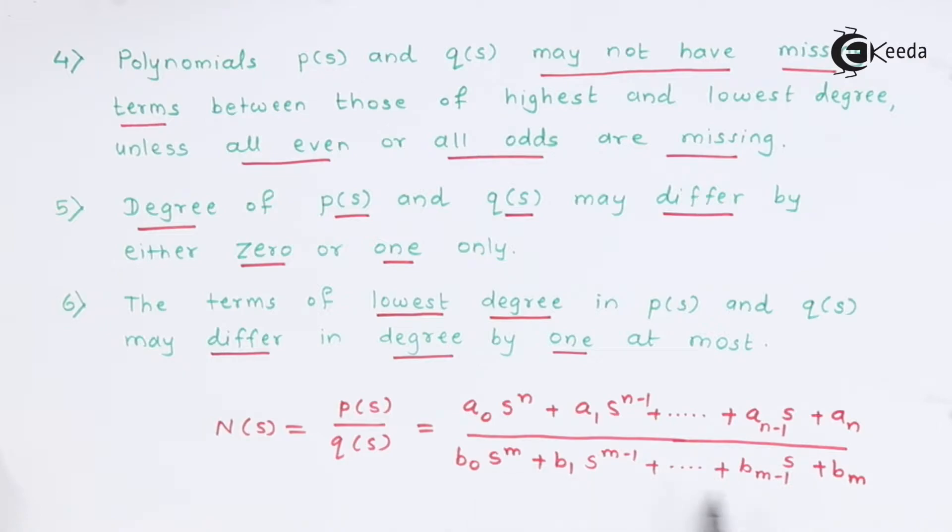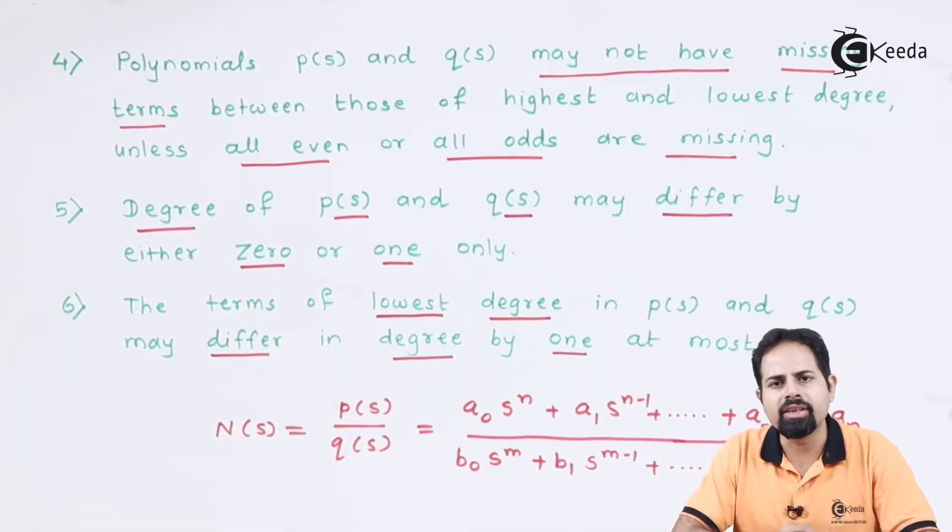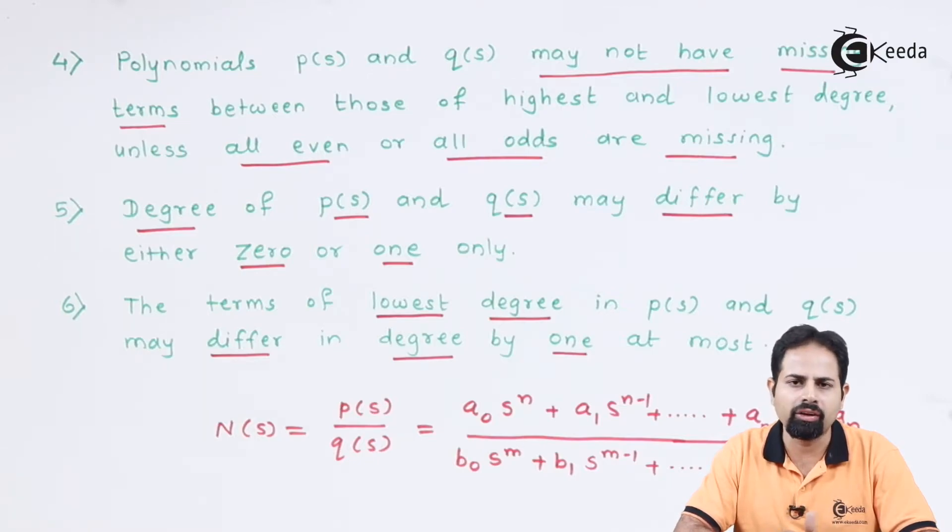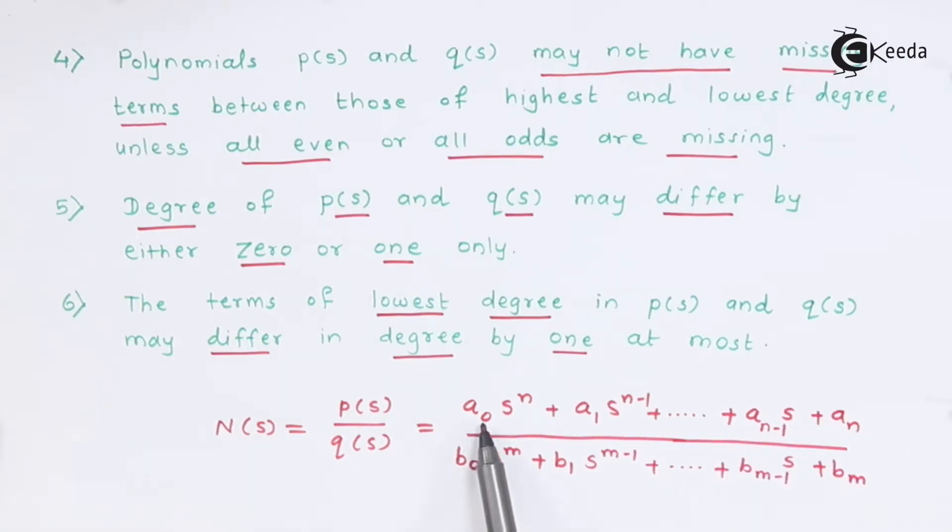This is the form of P of S and Q of S. It is having S rest to N. It is having S rest to M. A and B are the coefficients. Now for passive elements like resistor, inductor and capacitor, already we have seen that their values are always positive. And for that reason, all these coefficients A0, A1, A-1 or B0, B1, Bm-1, they are always positive as well as real.